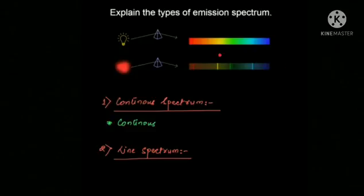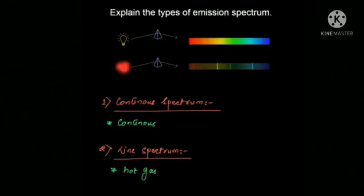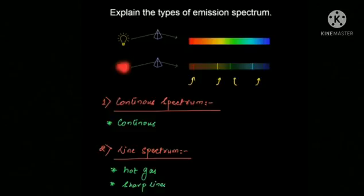Looking at the diagram for line spectrum: light from a hot gas — whose atoms have been promoted to a higher energy level — is passed through a prism. When the spectrum is obtained, we see certain sharp lines on a dark background. These sharp lines on a dark background constitute the line emission spectrum.